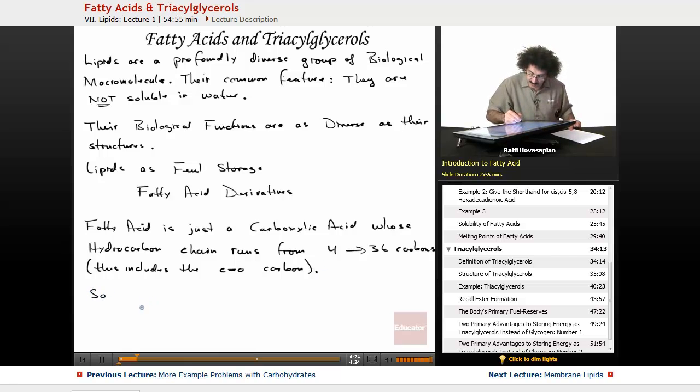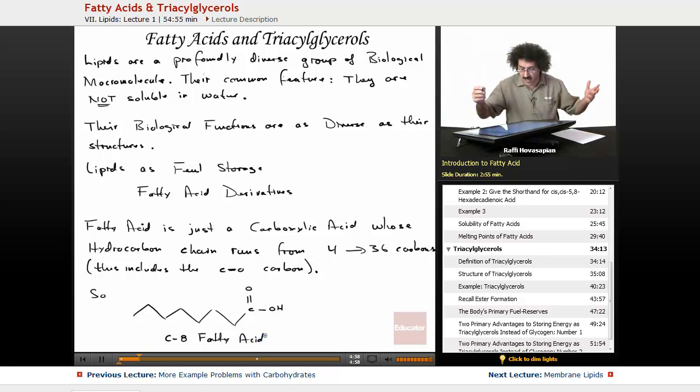Quick example - I'll do it in line form because it's often best to represent these in line representations. So one, two, three, four, five, six, seven, eight. So this is a C8 fatty acid.